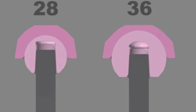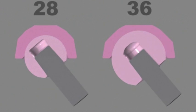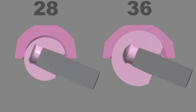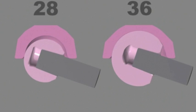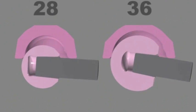This compares a 28mm ball to a 36mm ball. The 36mm has a greater range of motion before impingement and subsequent dislocation.